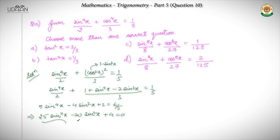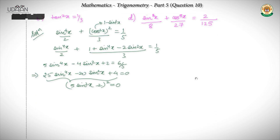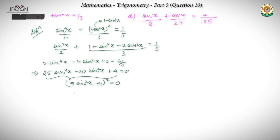Now if you see, this forms a perfect square: (5sin²x minus 2)² equals 0. So I can see that sin²x equals 2/5, because if the whole square is 0, the value inside is also 0.